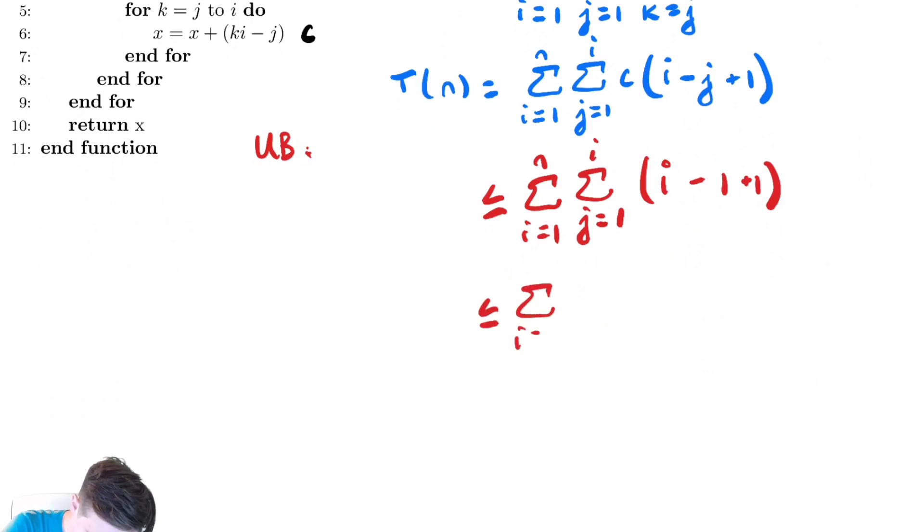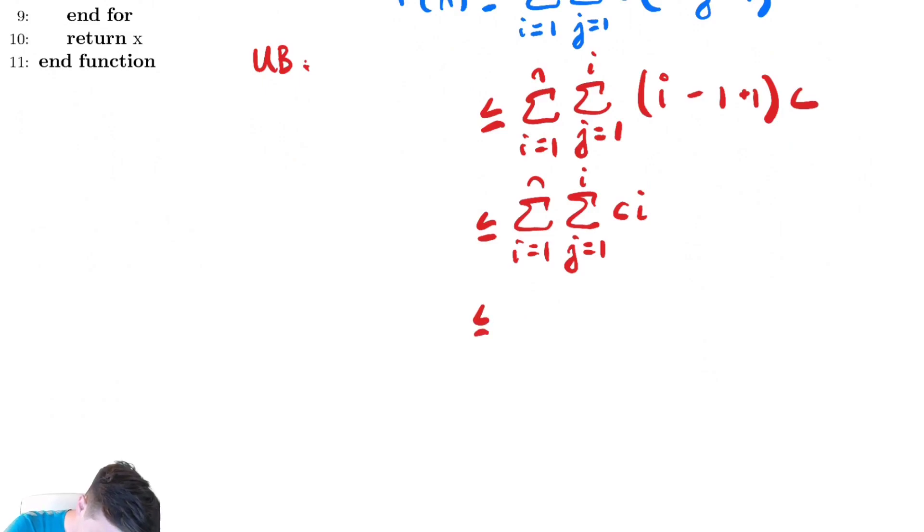So we have the sum from i equals 1 to n of the sum from j equals 1 to i of c i. Now we need to be careful. Our summation index for that innermost summation is j. No j's are appearing. So we can just evaluate how many times that loop occurs. So this is less than or equal to the sum from i equals 1 to n of i copies of c i or c i squared. And now you could try to use a formula to evaluate what c i squared is. But we've already given up hope on an exact answer.